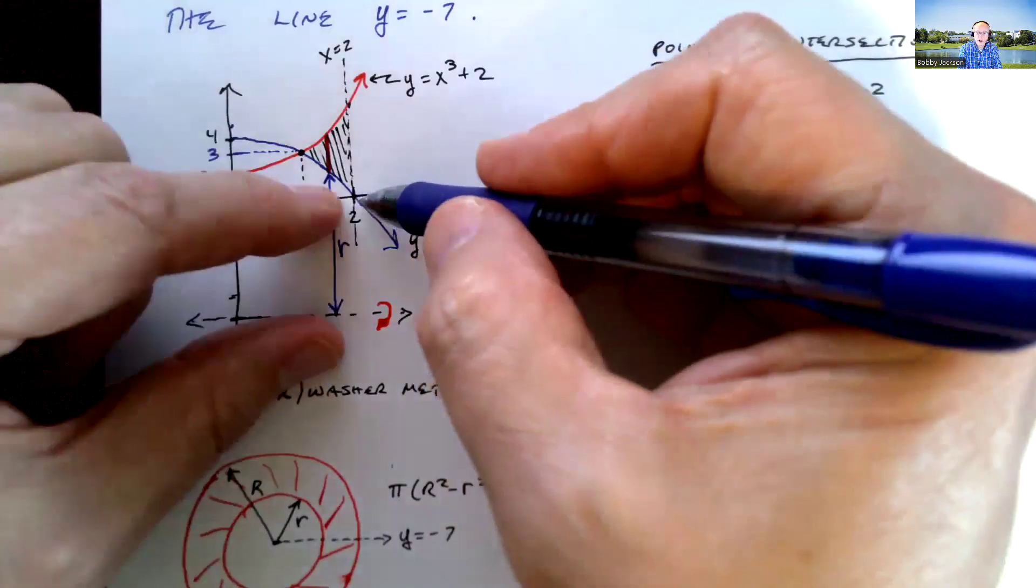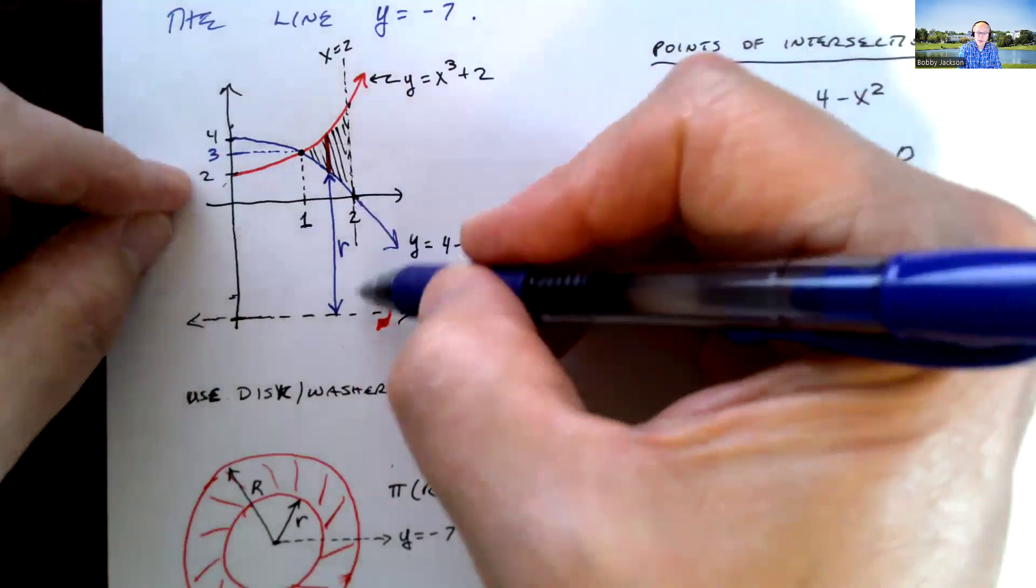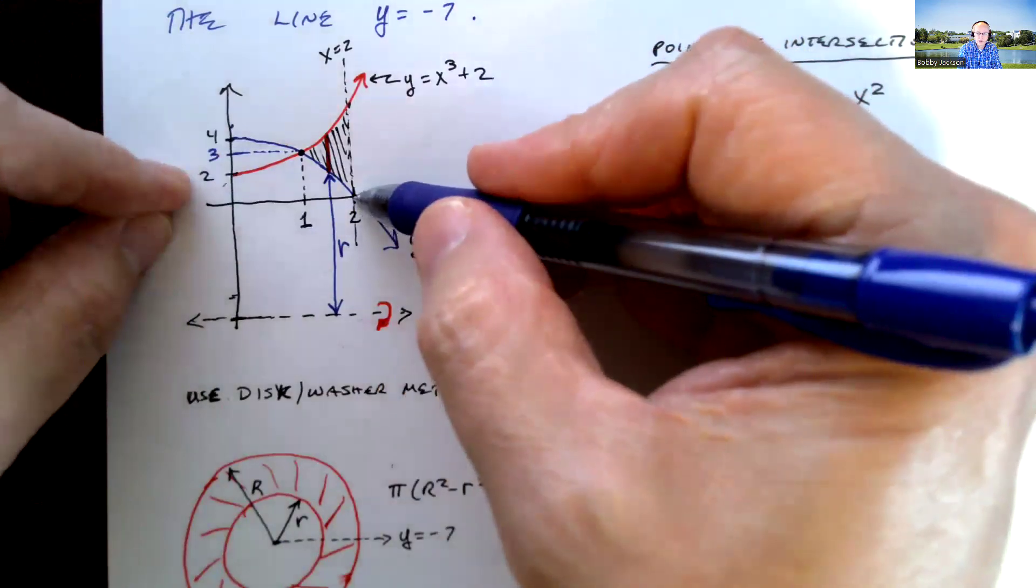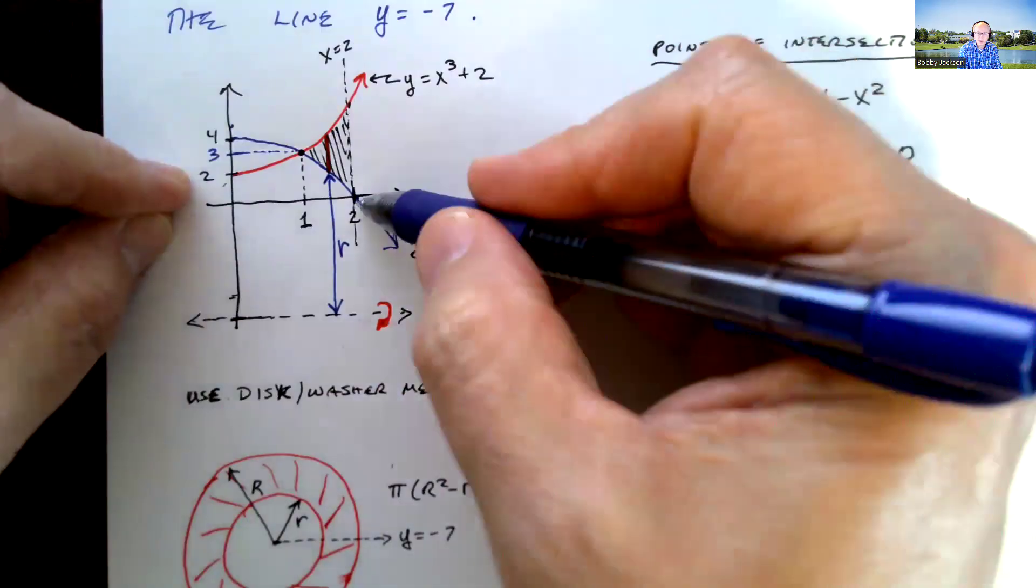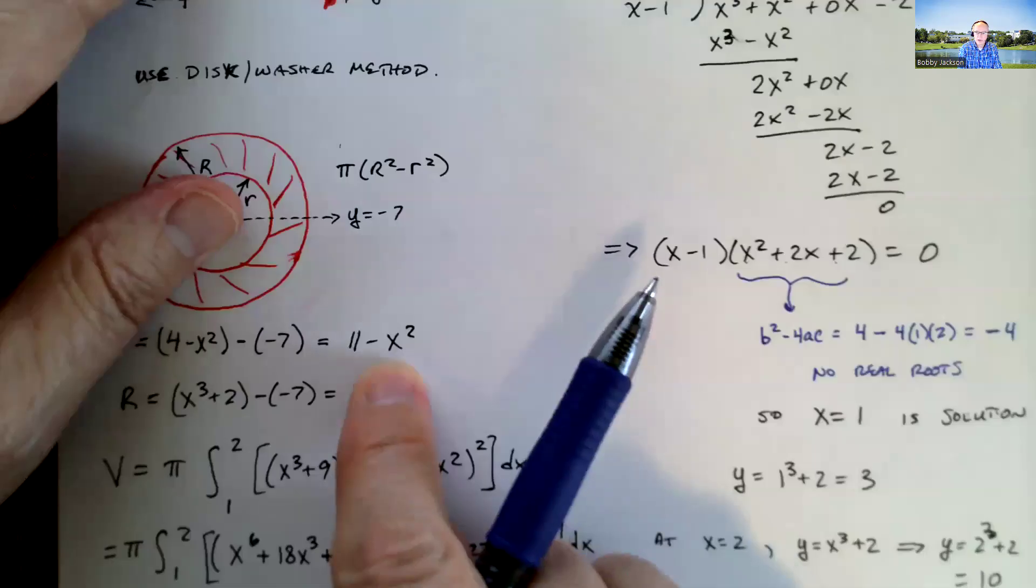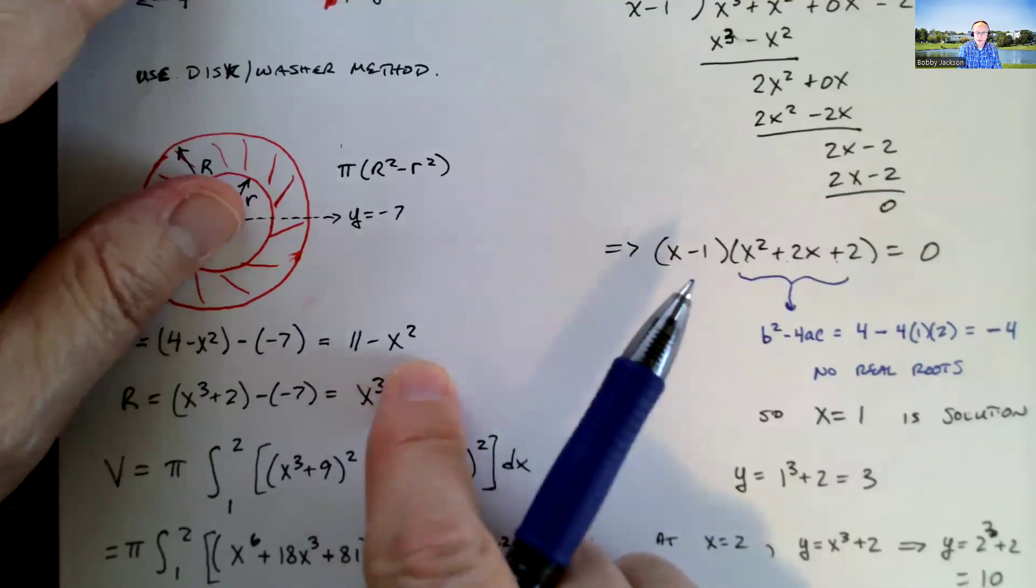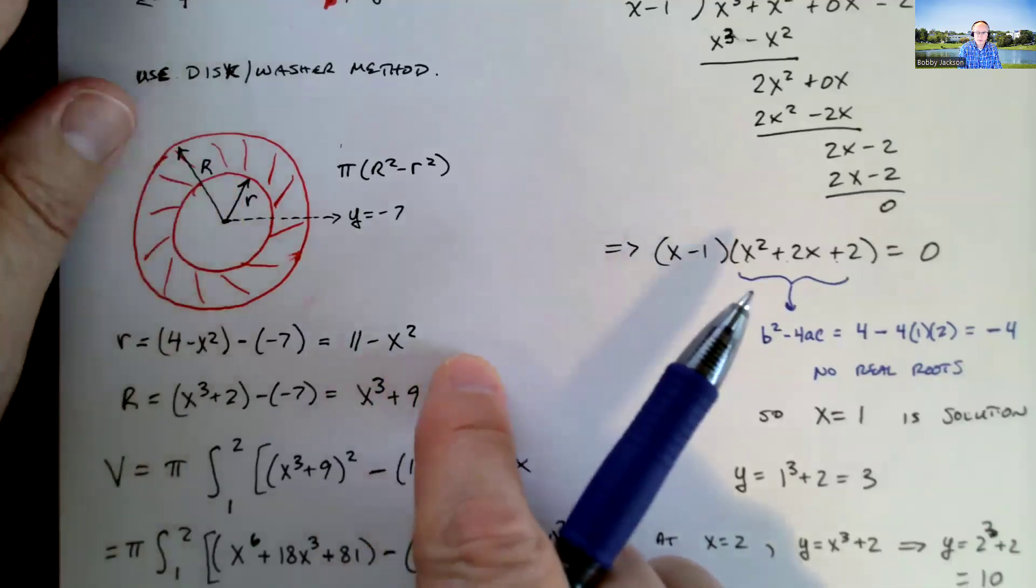And then by the time I get to 2, that little r is going to be just 7, because that point is right at 2 comma 0 on the curve y equal 4 minus x squared. So I'm going to get 7 when I plug in 2. And notice that's what I get when I plug in 2: 11 minus 2 squared, 11 minus 4 is 7.